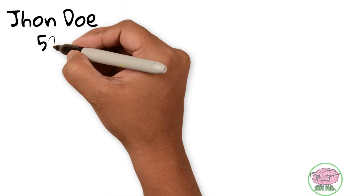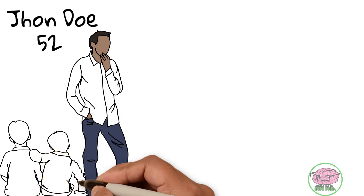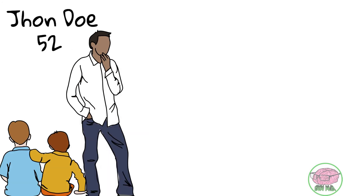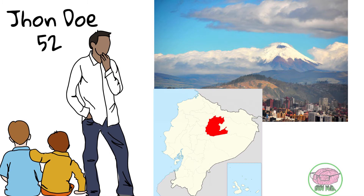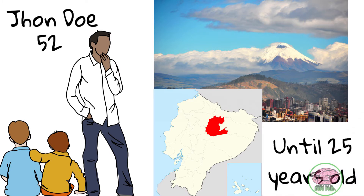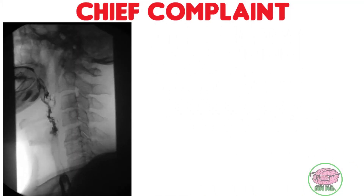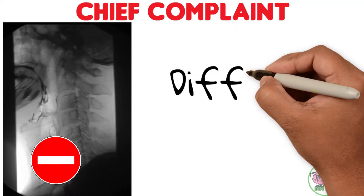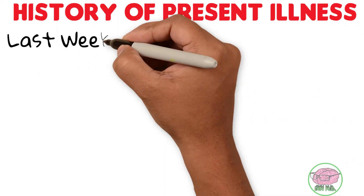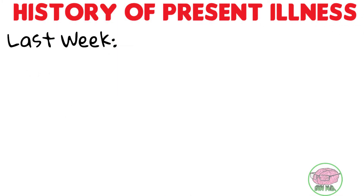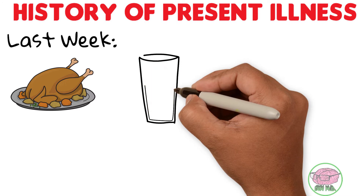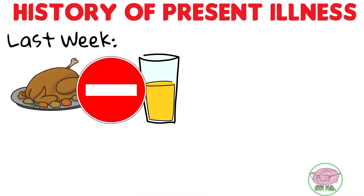Chendo is a 52-year-old married man that lives in Quito, Ecuador, and was born in Napo, located in the Ecuadorian jungle, where he lived until he was 25 years of age. He comes to your office complaining of difficulty swallowing food. He says that last week he has had important difficulty swallowing, and he has these problems with both solids and liquids.